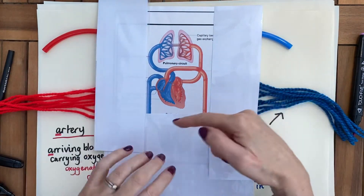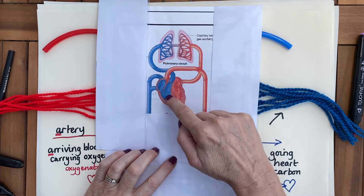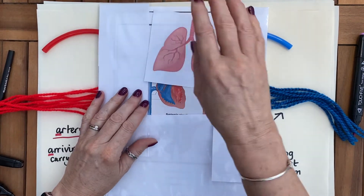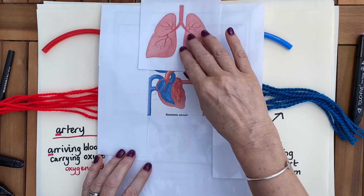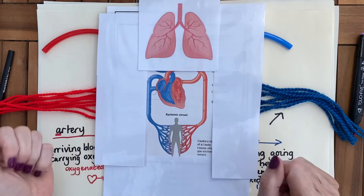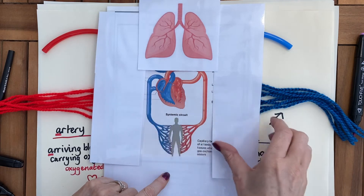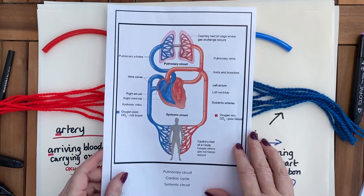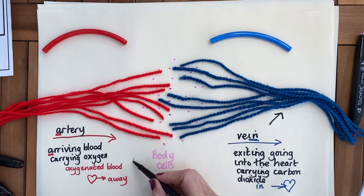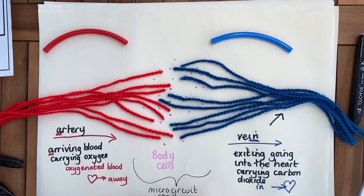Deoxygenated blood, colored blue, is coming back from the rest of the body. Every one of those cells has used the oxygen, and then carbon dioxide needs to go up to the lungs to be exhaled. The blood picks up oxygen and comes back to the heart to take it through every blood cell. The smaller network — the micro-circuit of capillaries — brings oxygen to every single cell and takes away carbon dioxide through the venules and veins.